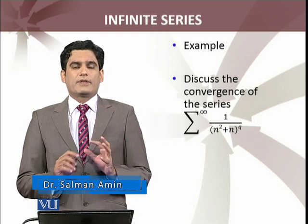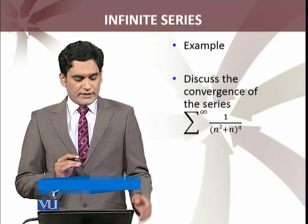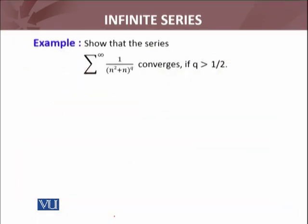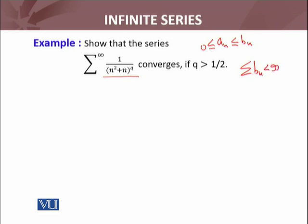For deciding about the convergence of that series using the comparison test — to recall: whenever we have a_n greater than or equal to 0 and less than or equal to b_n, then if summation b_n is less than infinity (i.e., b_n is convergent), it implies summation a_n is also less than infinity.